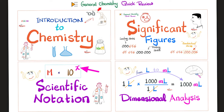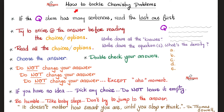Please watch the videos in this general chemistry quick review playlist in order. Remember how we tackle chemistry problems? Read the last part of the question first, then continue and read all of the question. What do they want from you? They want the density — try to guess the density before you look at the choices. Do the math first and then look at all of the choices.